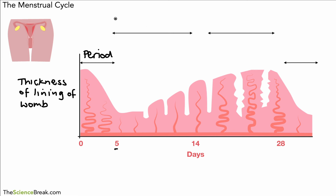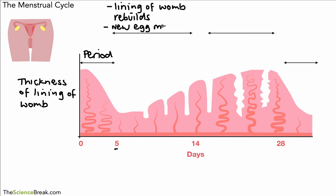Then we have the new cycle. The first thing is that the lining of the womb starts to rebuild — it thickens — and secondly a new egg matures, ready for release. This happens between day five and day 14. Around about day 14 we have the release of the egg, as we saw previously.